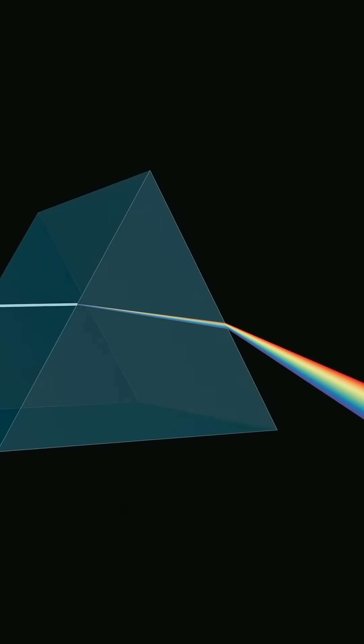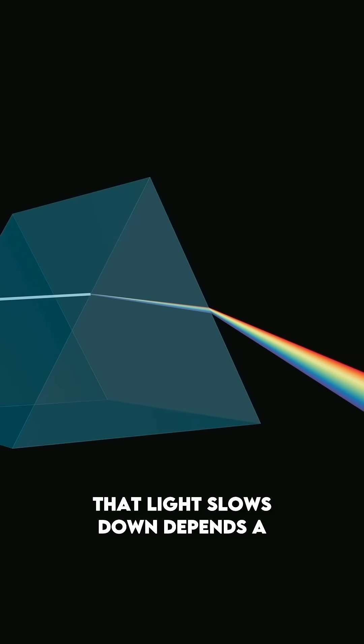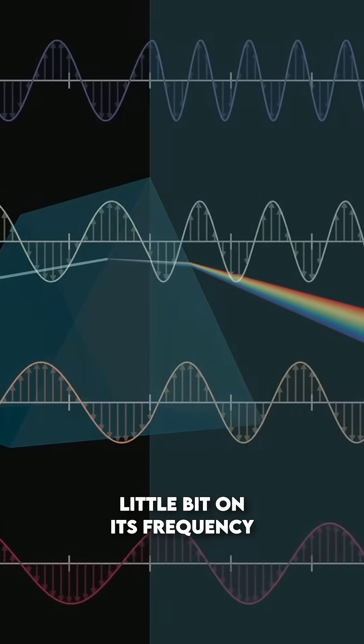What's going on with a prism, then, is that the specific amount that light slows down depends a little bit on its frequency.